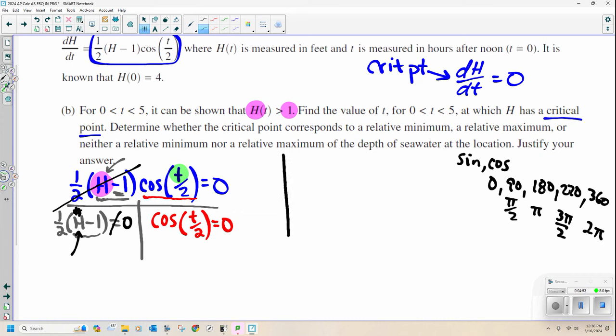If I were to graph cosine, and at 0, here's 90, which is pi over 2. Here's 180, which is pi. Here's 270, which is 3 pi over 2. And here is 360, which is 2 pi.